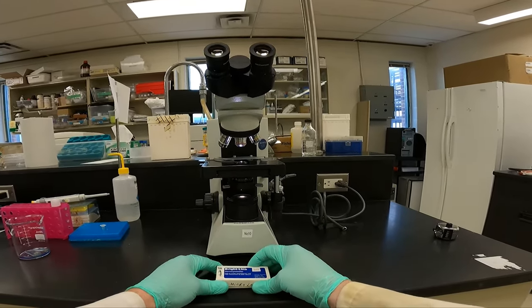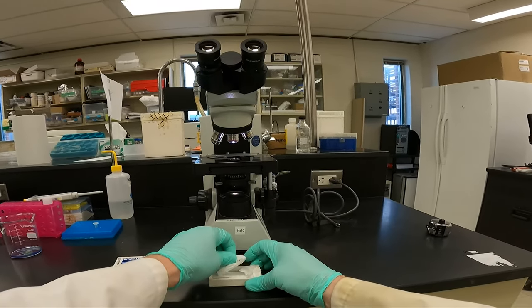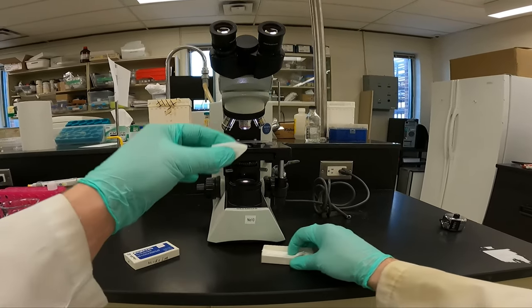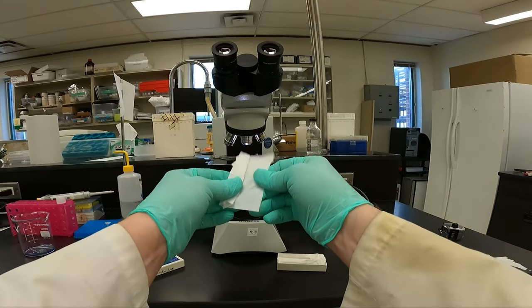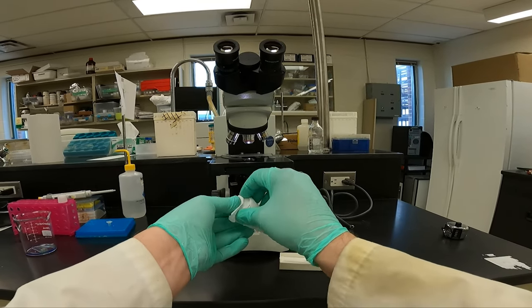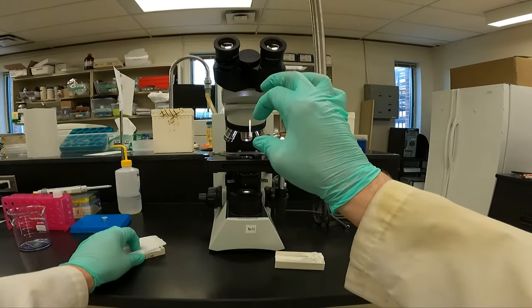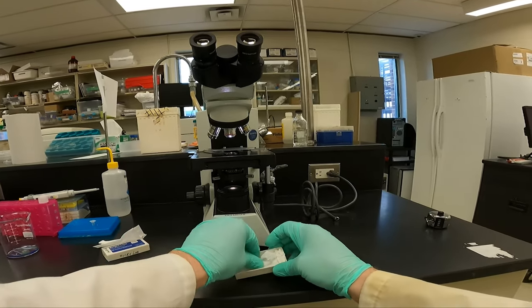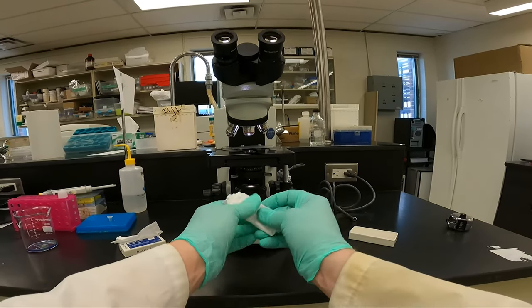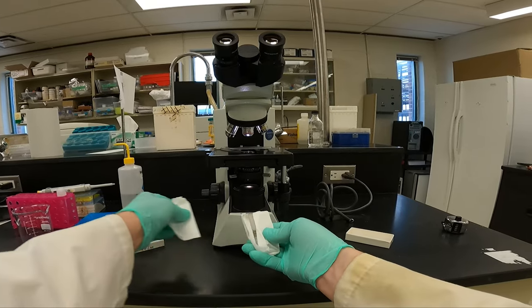Here we have our hemocytometer. It has a laser etched grid on it. And we'll use that to count ourselves. Inside, you'll find two things. You'll find a weighted coverslip. This is different than a coverslip you'd use for a wet mount. It is heavier. Please be careful with it. It's a bit expensive.